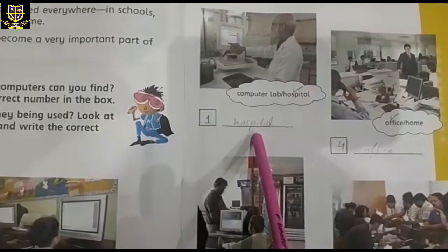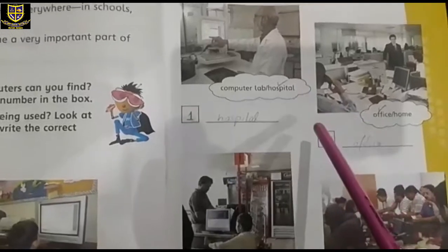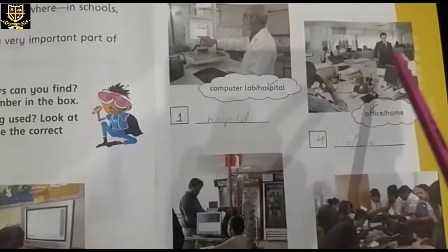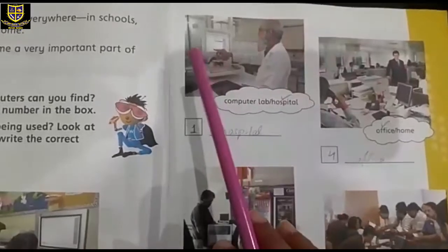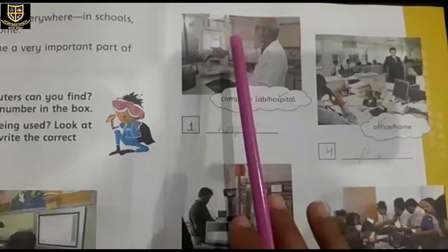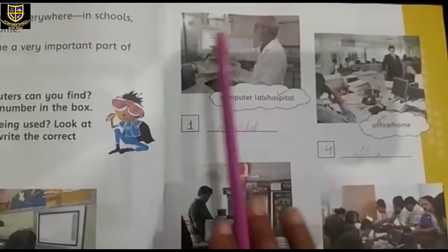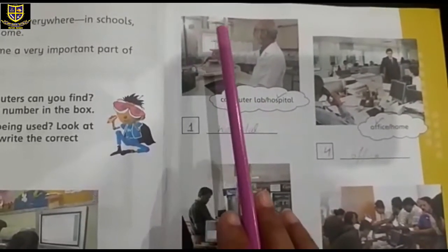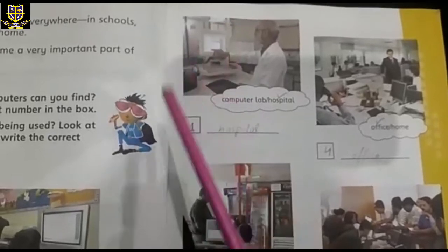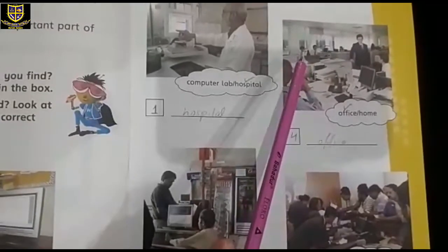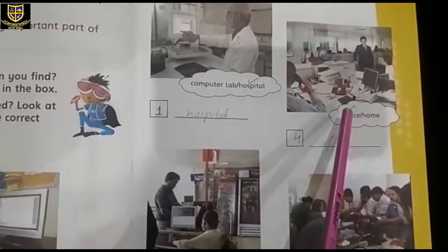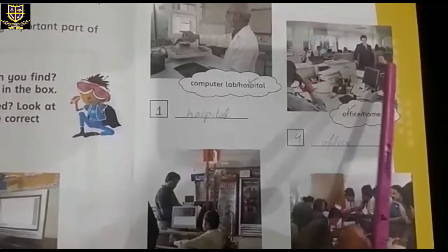Very nice. Now look at this picture — you are also going to write the number of computers. You can see one computer in this picture, so write one in this blank bracket. Now move to the second picture: they are asking is it home or office?